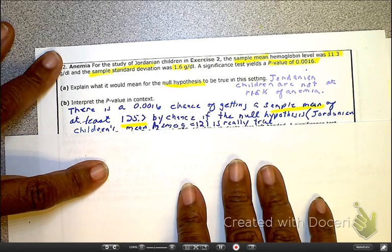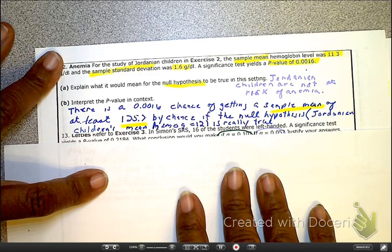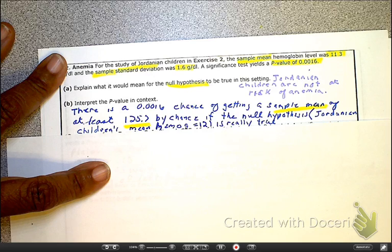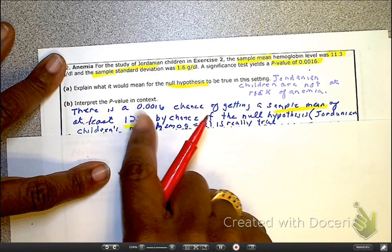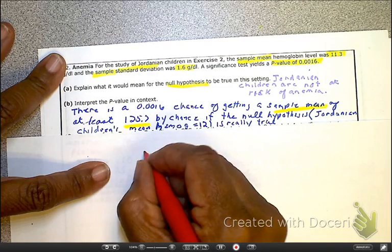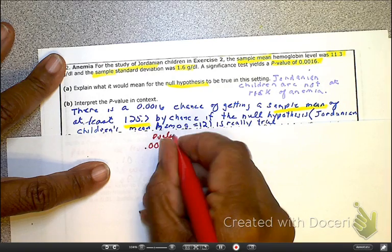So that is the whole thing. And in this particular problem, if we had to make a decision on whether to reject or fail to reject, and this is not what they asked, but if they asked, would you reject or fail to reject in this situation, because you have such a small p-value.